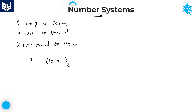Because of that reason, base value is very important. Here the base is 2, so this number belongs to the binary number system. To convert any binary number to decimal, it all depends on place values.